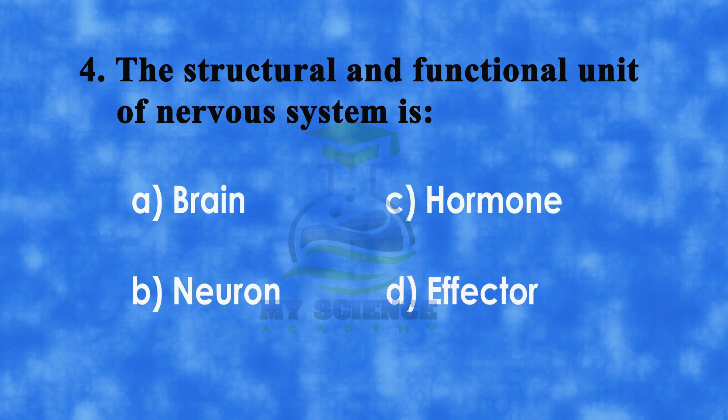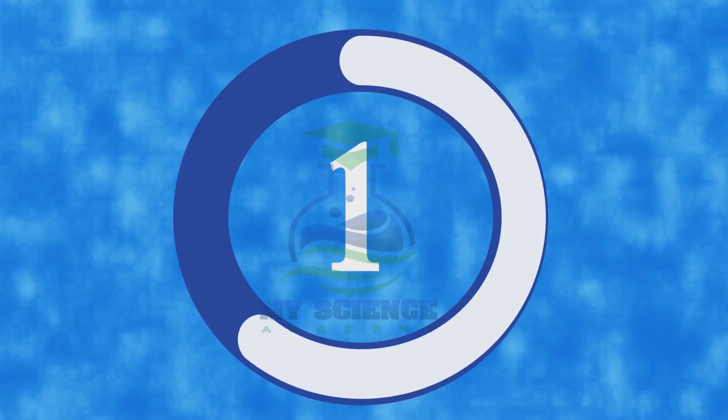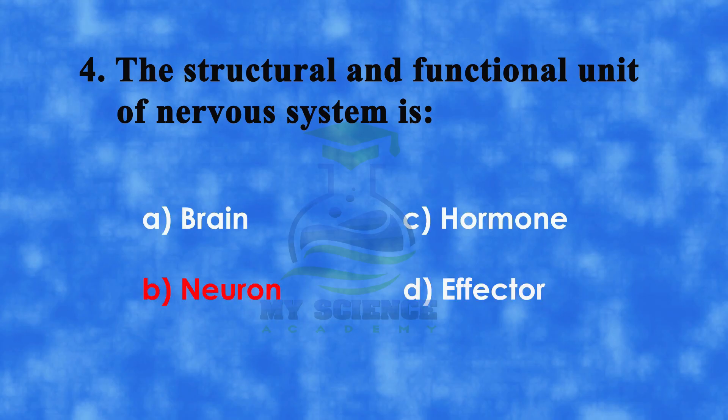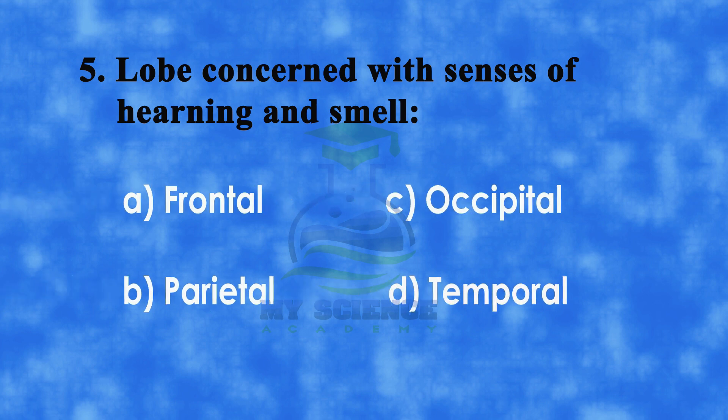Number 4: The structural and functional unit of nervous system is. A: brain, B: neuron, C: hormone, or D: effector. And correct answer is B: neuron.